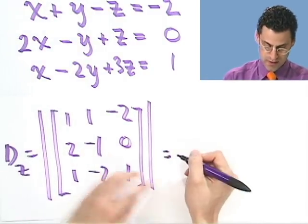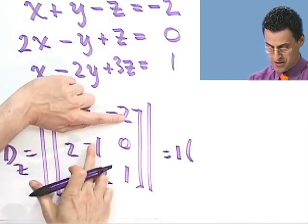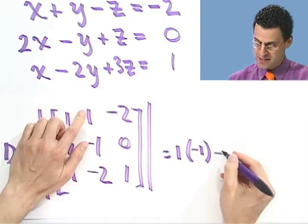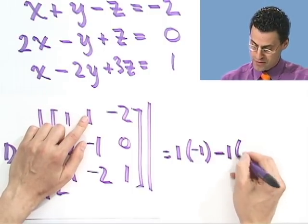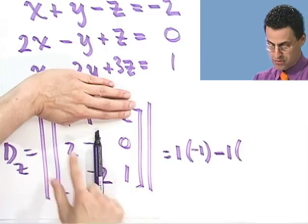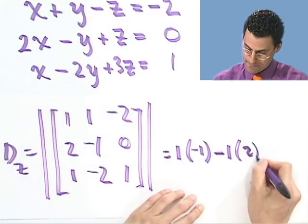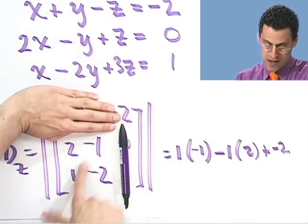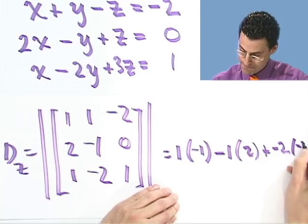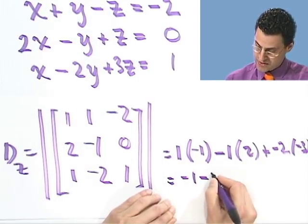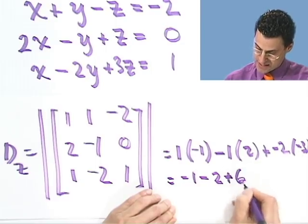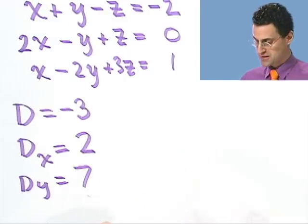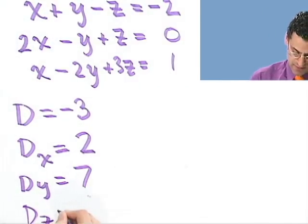Because what do I see? I see a 1 times that determinant, which is just negative 1 minus 0. So it's negative 1. And then I see a minus. Remember, it's a minus sign now, because we're in that row. A 1. And then it's determined here, which is 2 minus 0. That's just 2. Plus a negative 2 times that determinant, which is minus 4 minus minus 1, which is minus 3. So I see minus 1 minus 2 and plus 6. So that gives me a net gain of 3. So the determinant of this matrix is 3. So dz equals 3.